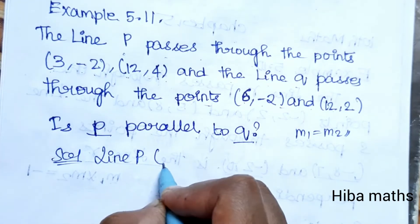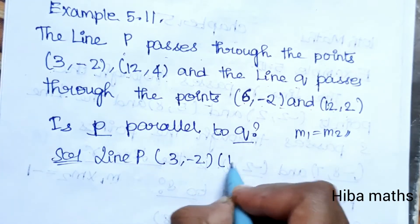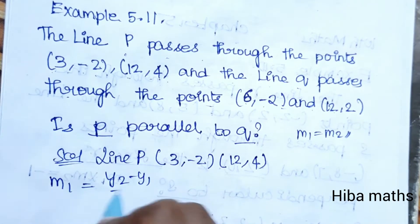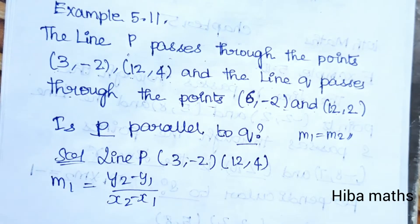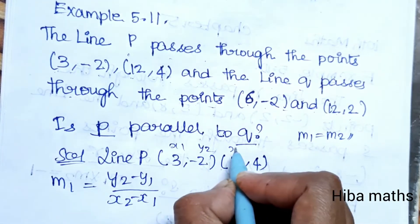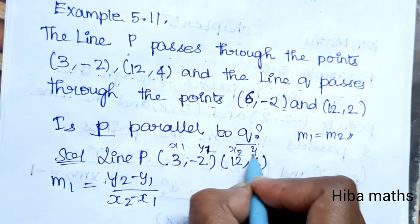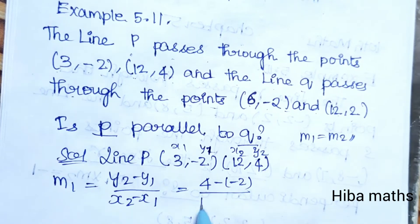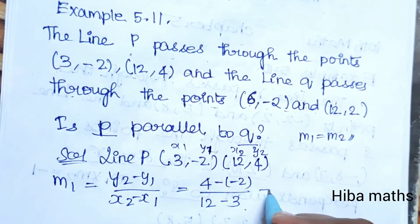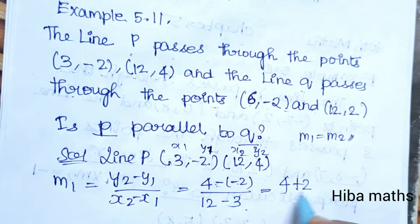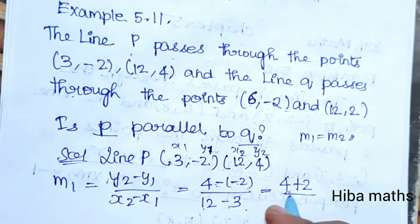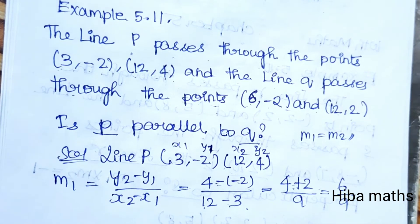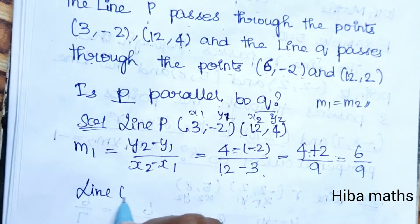Solution: Line P passes through (3, -2) and (12, 4). The slope M1 is calculated using the formula (Y2 - Y1) / (X2 - X1). That gives us (4 - (-2)) / (12 - 3) = (4 + 2) / 9 = 6/9. This is the first slope M1 = 6/9.